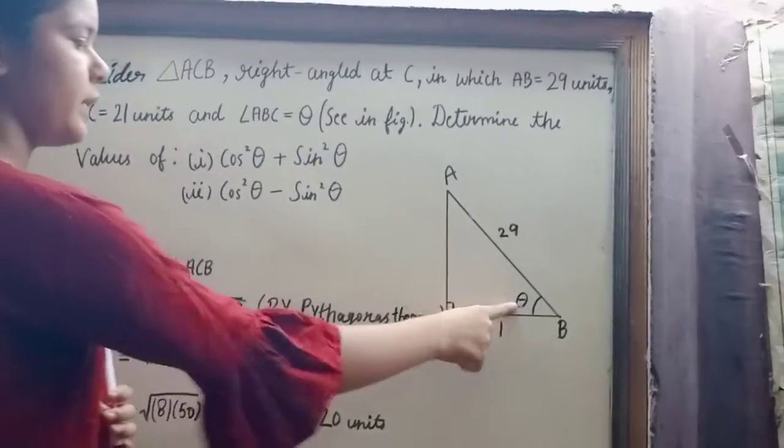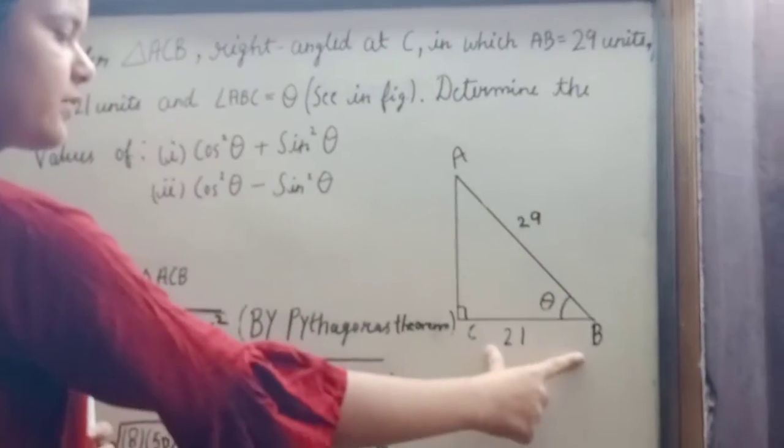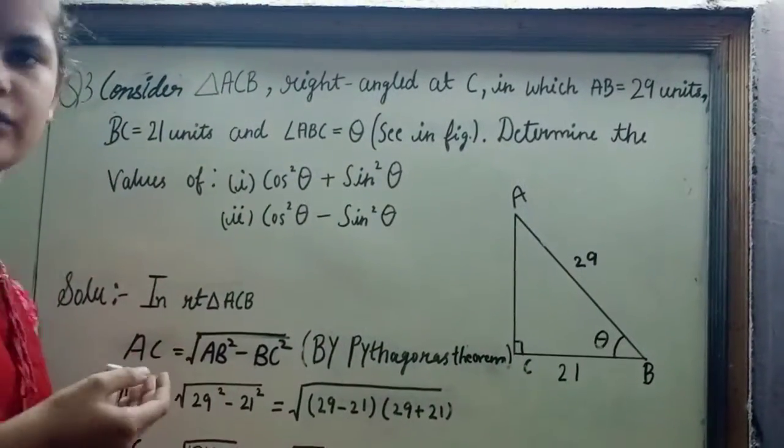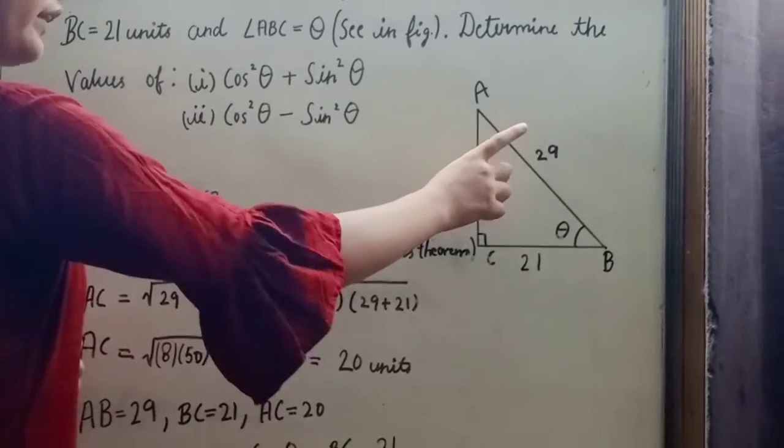Consider triangle ACB, right angle at B, AB is equal to 29 units and BC is equal to 21 units. Determine the values of: (i) cos square theta plus sin square theta and (ii) cos square theta minus sin square theta.